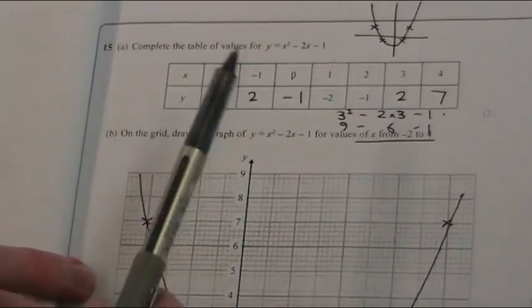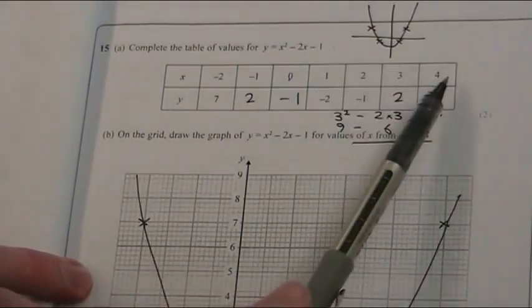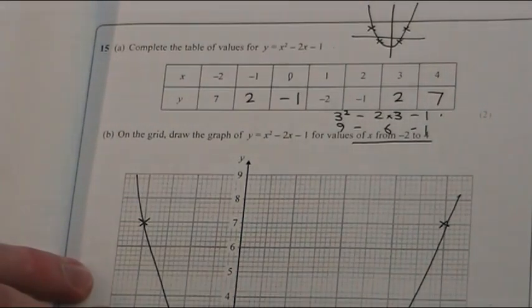And the table of values, conveniently, went from minus 2 to 4, and it always will. It just simply means plot those on this graph.